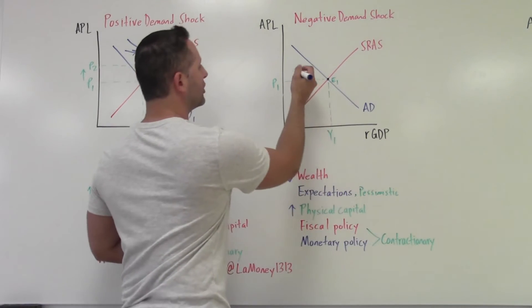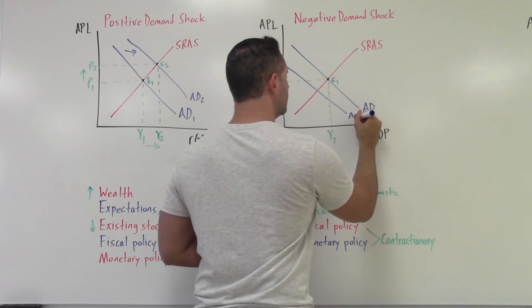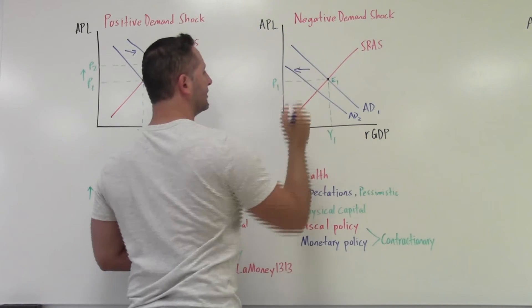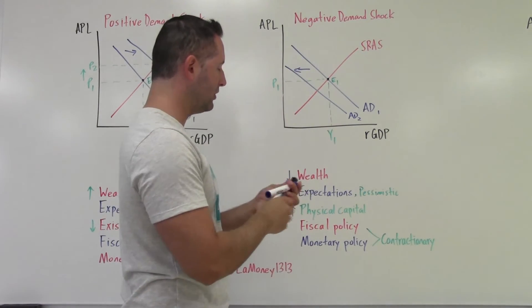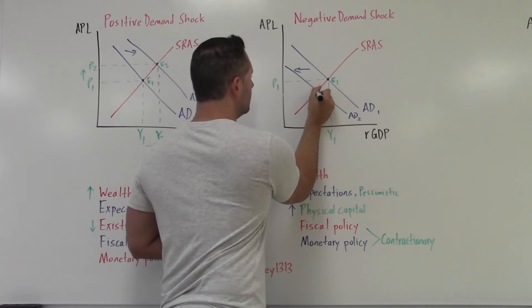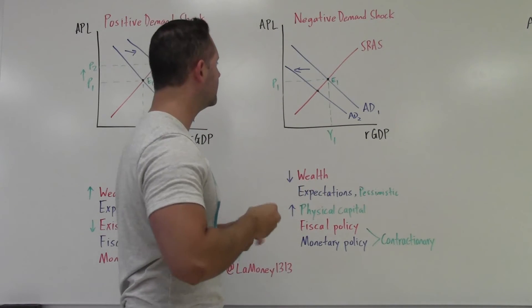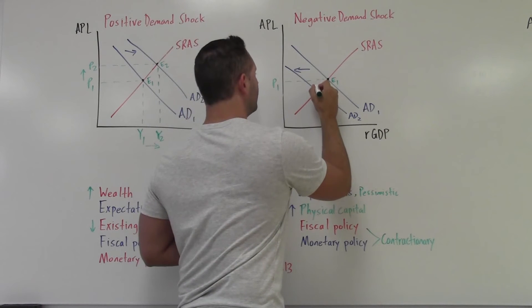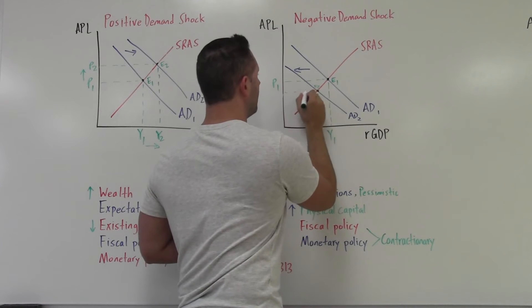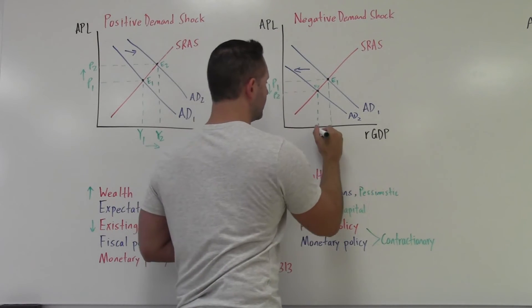So aggregate demand curve is going to shift to the left. And when we see that happen, so AD, now we label that one and two, shift left, we have our new point of equilibrium. And we can probably see it just by sight, you can notice it, but I want you guys, again, get in the habit, draw it out to each axis, don't just leave it there. You can probably see that price level has fallen, can see that output has fallen, get in the habit, show it to yourself, no reason to miss something easy.